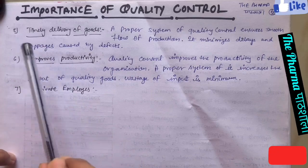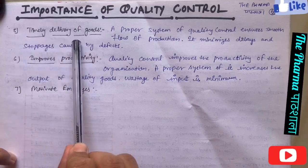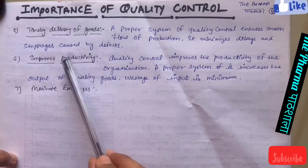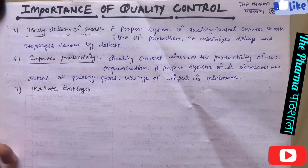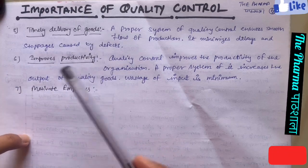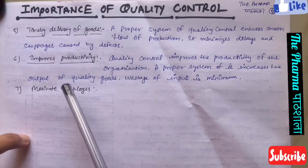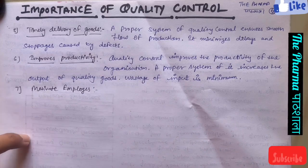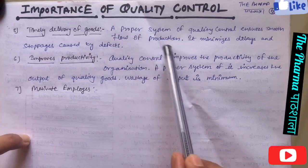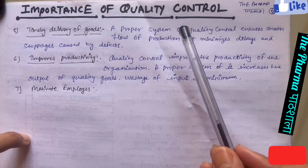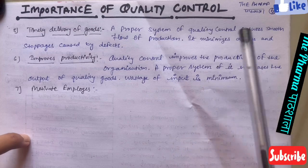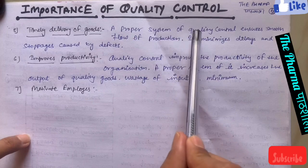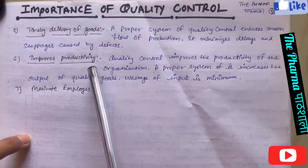Next important quality control system benefit is timely delivery of goods। If we have a good quality control procedure and we follow it, there will be no defects in the product. If there are no defects, there will be no problem in the process, and therefore the delivery of goods will be timely।